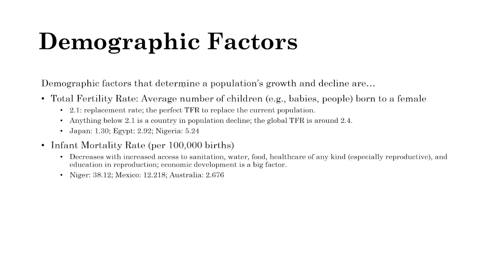Niger has an infant mortality rate of 38.12 — a pretty high rate, indicating it's not a very developed country. Mexico has a moderate rate of 12.2, still decreasing but not as low as other countries. Australia has a low infant mortality rate of 2.76, indicating it is a pretty developed country.